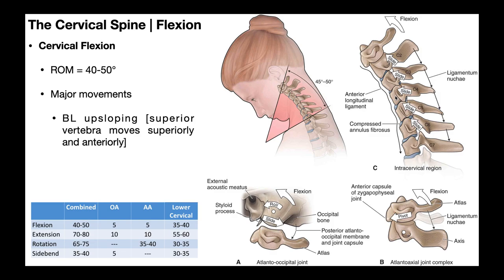We're going to see the opposite in cervical extension, which is downsloping at each level. We also have the atlanto-occipital joint, which is the joint between the occiput and the atlas, and the atlanto-axial joint. Flexion still occurs at these levels. At the atlanto-occipital joint, the skull via the occipital condyles is rolling anteriorly.